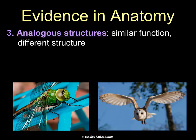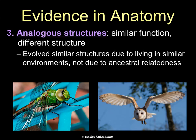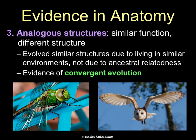Last are analogous structures. These are the opposite of homologous — they have similar function, but completely different structure. It's believed that organisms evolved similar structures due to living in similar environments, but they have different structures because they are not ancestrally related. We believe these are evidence of convergent evolution. For example, this owl and this insect both have wings and both fly because they live in the sky, but they are not related. Owls have bones in their wings and insects do not, so we believe they evolved through convergent evolution.